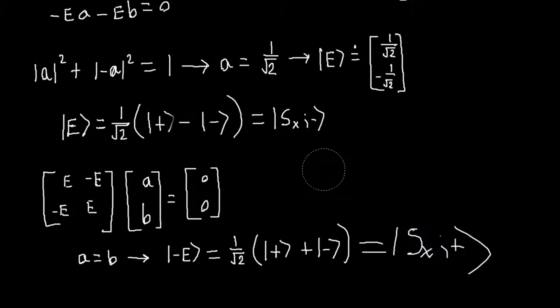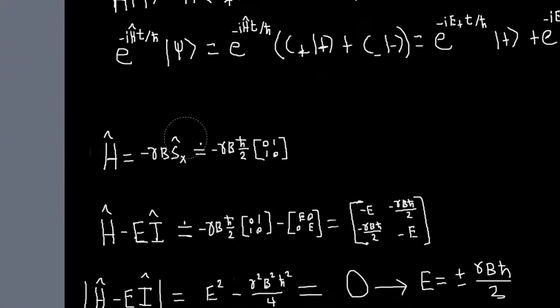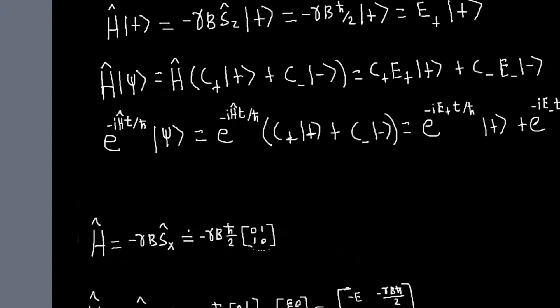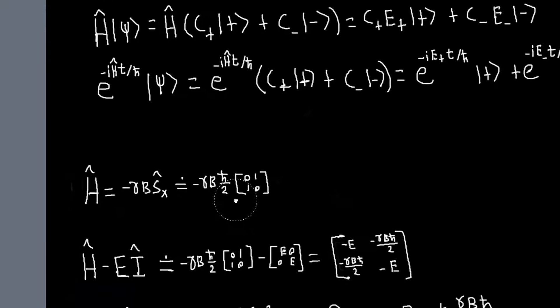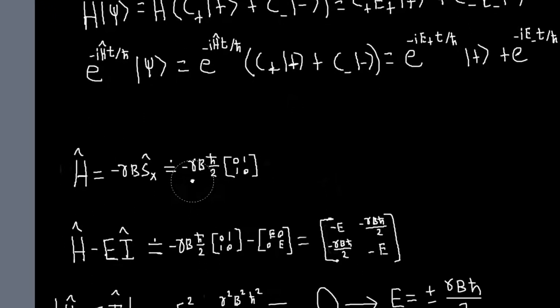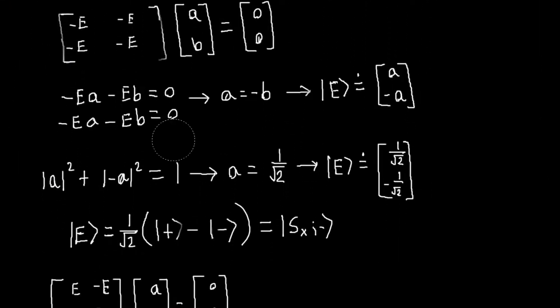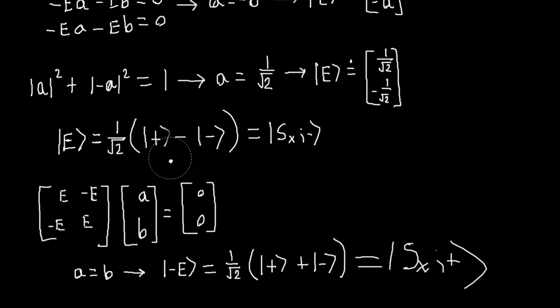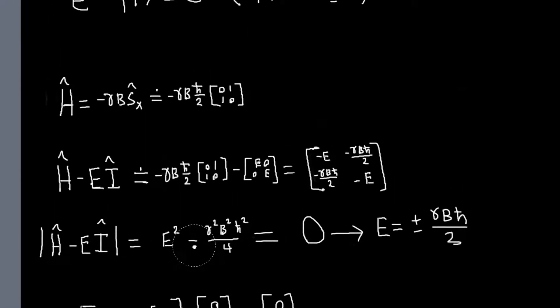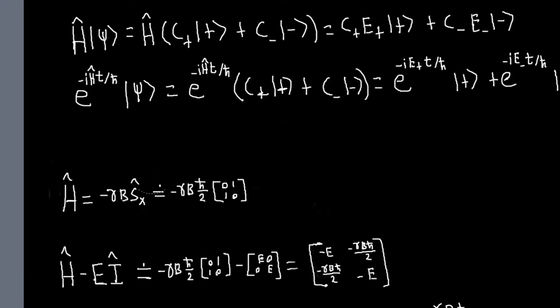So what we did is we had this Hamiltonian and we had it expanded or represented in terms of a basis that we knew wasn't its eigenbasis because that basis didn't give us a diagonal representation of this matrix. So we found the eigenvectors of this operator by just the usual linear algebraic methods. And they gave us what we expected. The eigenstates are just the Sx plus and minus ket as they should be because our Hamiltonian is just proportional to the spin x operator.